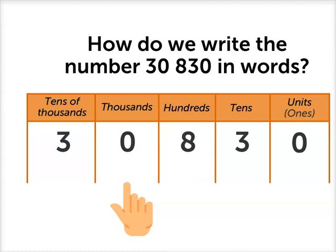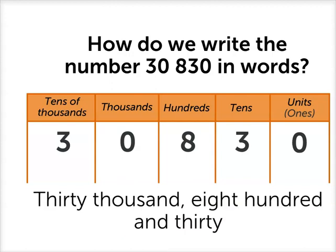And if we keep reading our number, we have 830. So to write this out, we would write 30,830.